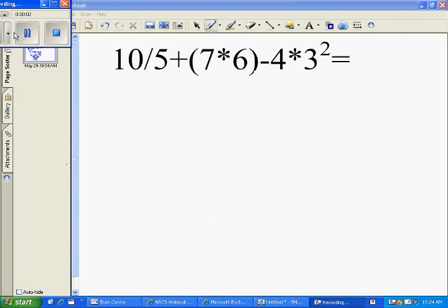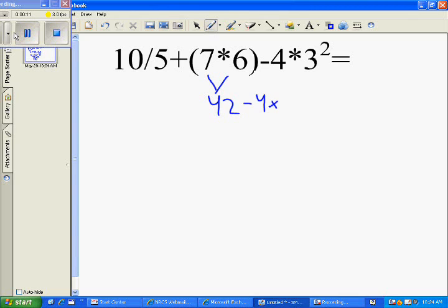Now our volunteer will try PEMDES. First, you will bring down the numbers in the parentheses, which is 7 and 6. 7 times 6 is 42, and then bring down the rest of your problem.